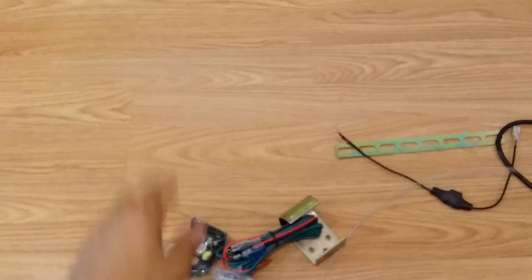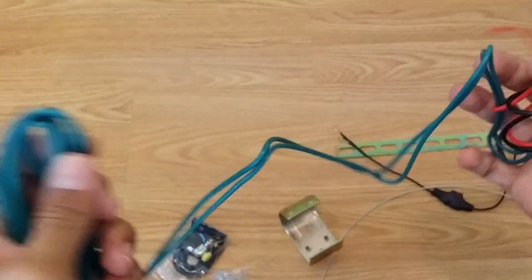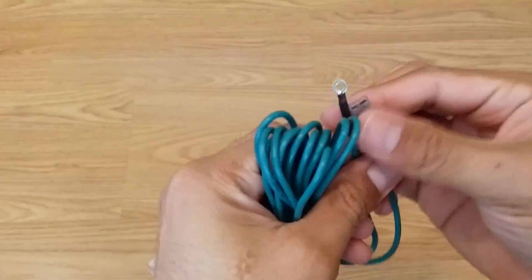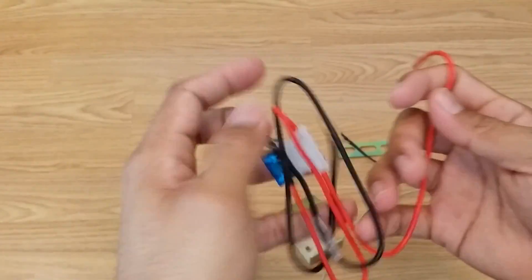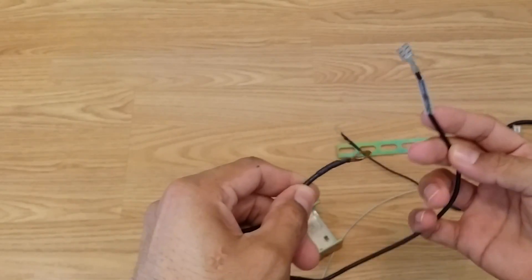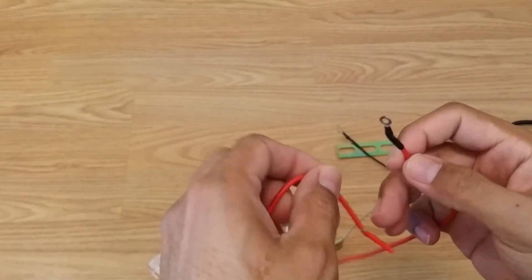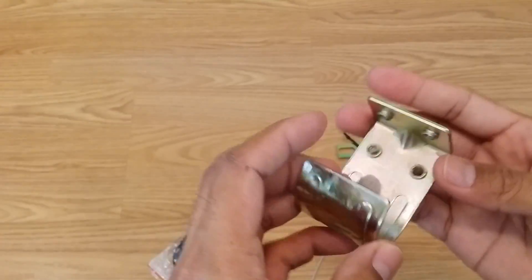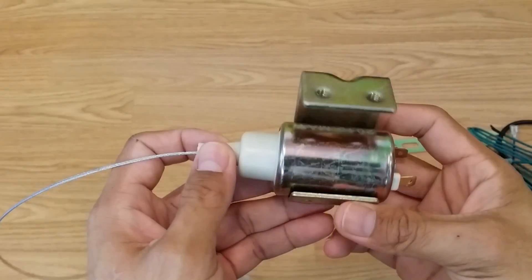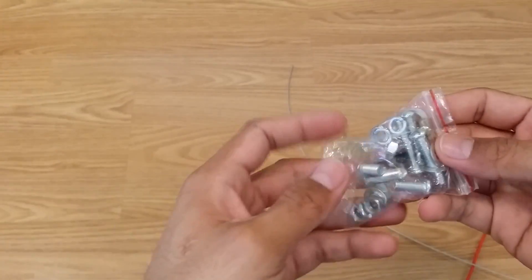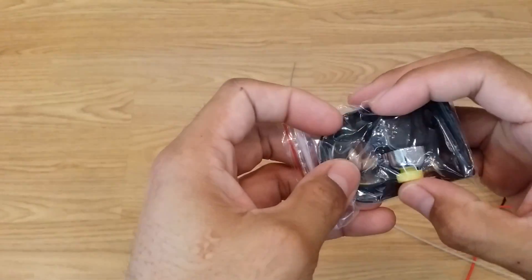So right now I'm just showing you guys the major components included in a typical trunk release solenoid kit. You have the solenoid itself, the wires needed to give the solenoid power—solenoid output wire, ground wire, 12-volt constant wire—the bracket to mount the solenoid to the trunk of the car, various screws, nuts and washers, and of course the button itself.